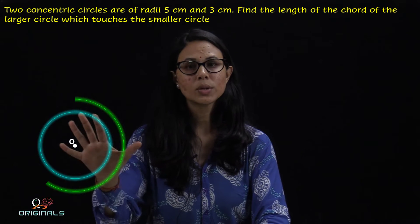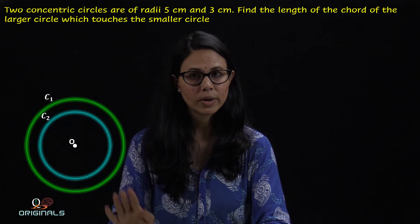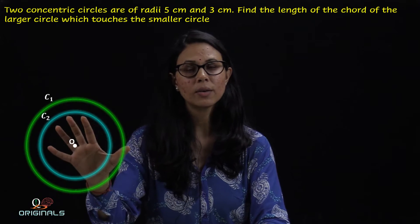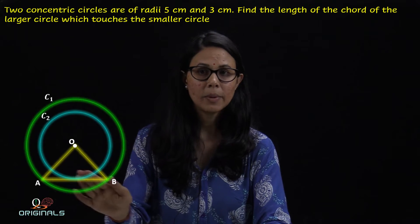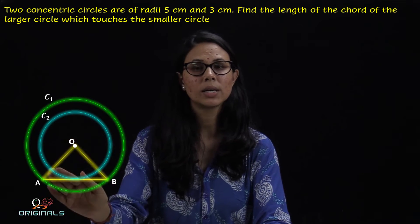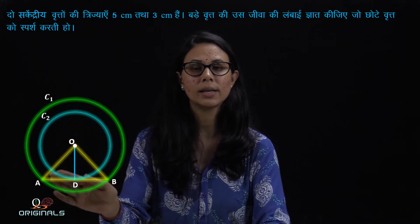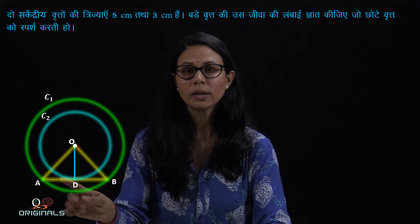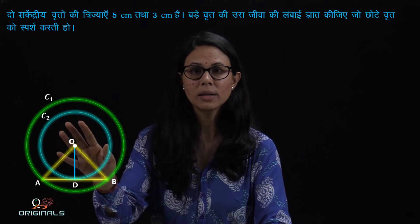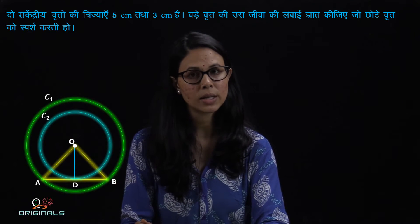Question में हमको 2 circles given हैं — C1 and C2 — दोनों का common center है O. Circle C1 is the bigger one और उसकी radius है OA. AB जो है, C1 circle की एक chord है, और AB जो है C2 — छोटे वाले circle के लिए — एक tangent का काम कर रही है. D is the point of contact of AB and circle C2. तो OD, circle C2 की radius होगी, which is 3 cm.